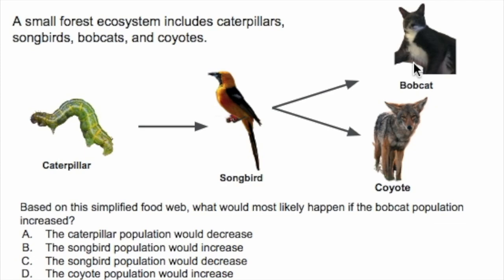What we have to think about is: if we increase the bobcat population, how is that going to affect the other populations? The idea with any food web question is the arrows always point up the hierarchy — towards the animal that's higher up in the food chain. Some people get confused and say the caterpillar must eat the bird because the arrow points towards the birds, but that's not how you interpret a food web diagram.